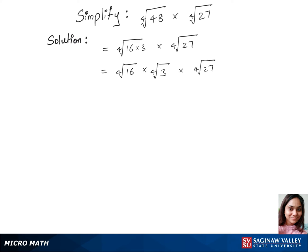In our next step, we can write fourth root of 16 as 2, because 16 is 2 to the power 4, and fourth root and power 4 get cancelled. So that's 2 times, let's join these two together now, fourth root of 3 and fourth root of 27, which is fourth root of 3 times 27.